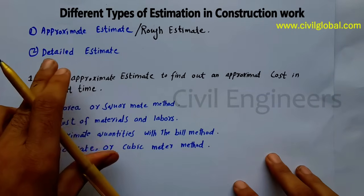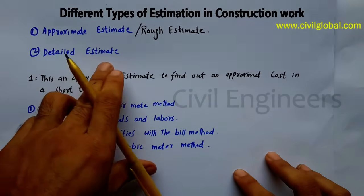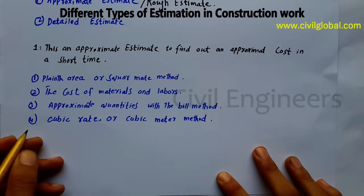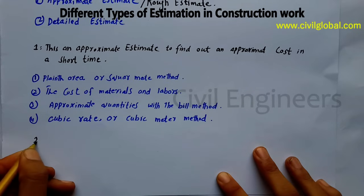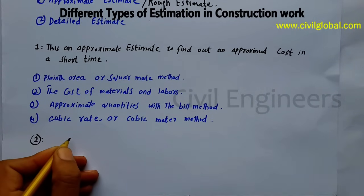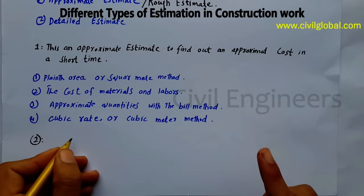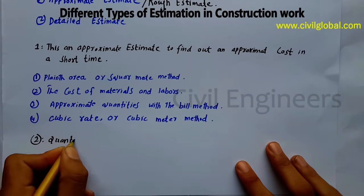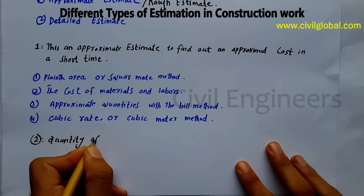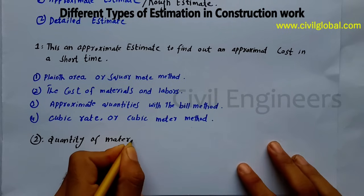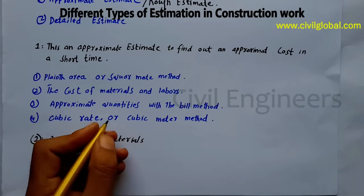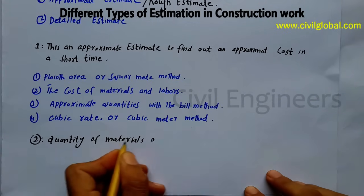Now the second type is the detail estimate. The detail estimate is defined as: the quantity of all items of work are calculated from their respective dimensions. Simply stated, the quantity of materials of work are calculated according to their respective dimensions.